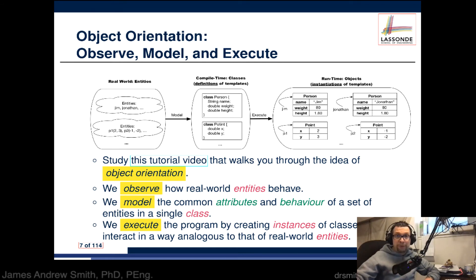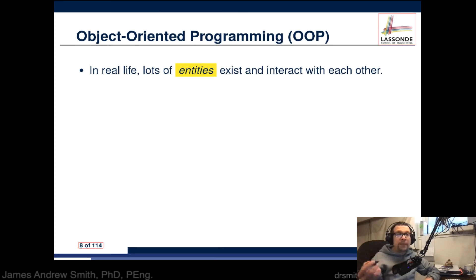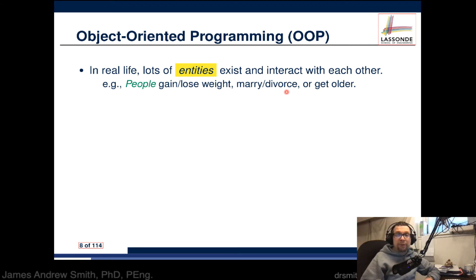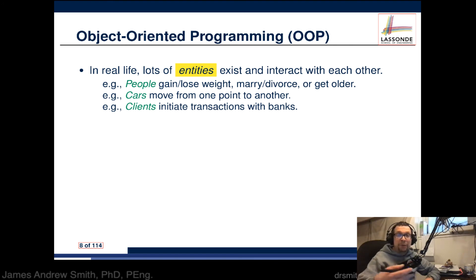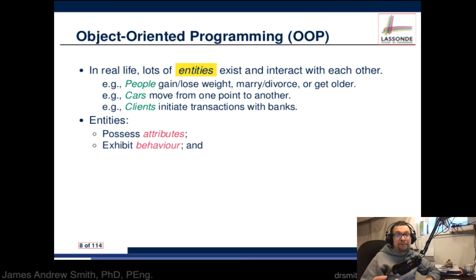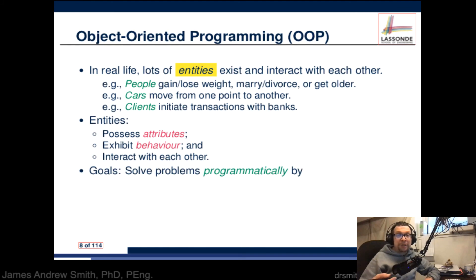The underlying assumption of OOP is that if it works and is intuitive in the real world, we can create programs that are just as intuitive. In real life, lots of entities exist and interact — people can gain or lose weight, marry, get older; cars can move and change over time; clients can initiate transactions with banks. Entities possess attributes like weight and height, they exhibit behaviors like walking or lifting objects, and they interact with each other and different types of entities.